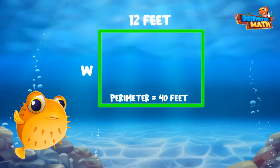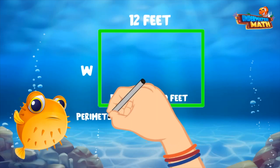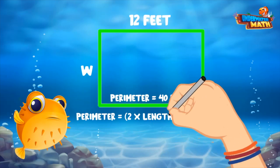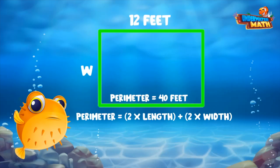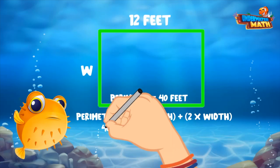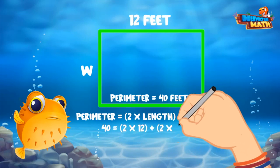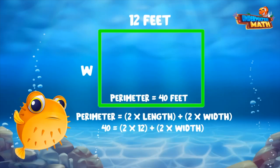We need to use this information to help us find the missing side length. We can plug the numbers we know into our formula for perimeter: perimeter equals 2 times the length plus 2 times the width. We know the length is 12 and that the total perimeter is 40, so let's plug those numbers in.